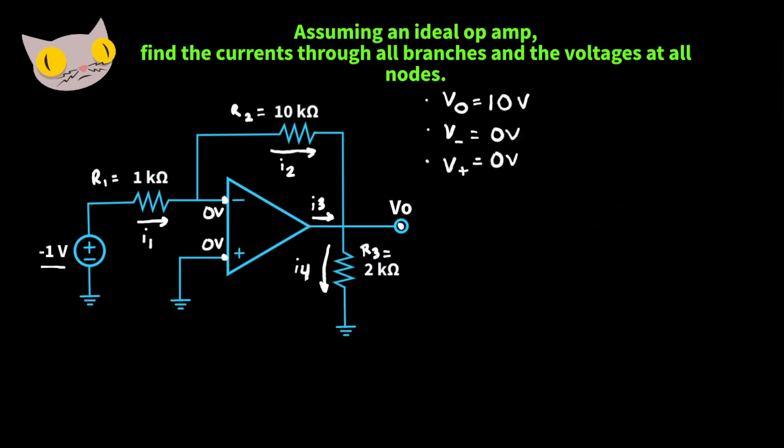We found all of our node voltages. Now let's move on to the currents. Let's start with the current going through this 2k ohm resistor. So to find the current through this resistor, we simply use Ohm's law. I4 is going to equal to the output voltage over R3, the 2k ohm resistor, giving us 10 volts over 2 times 10 to the third power ohms. Now we can solve that and get 5 times 10 to the negative third power amps or 5 milliamps.